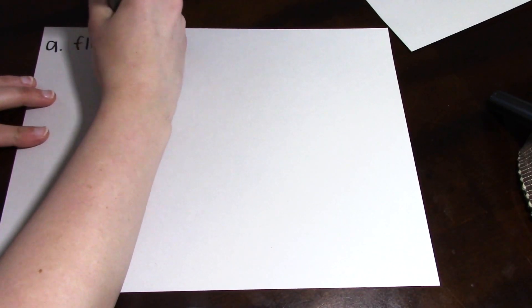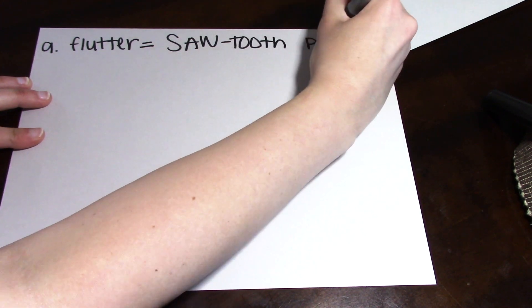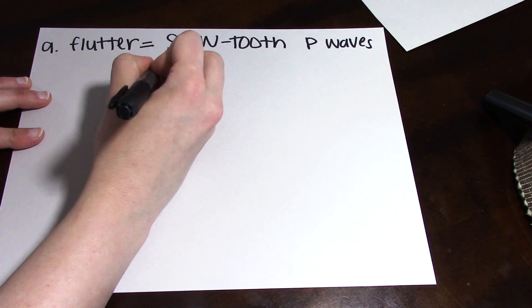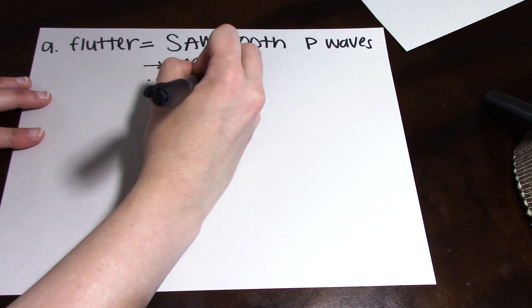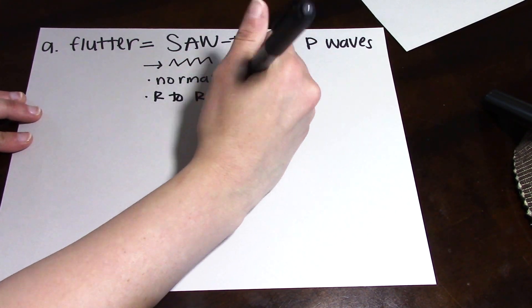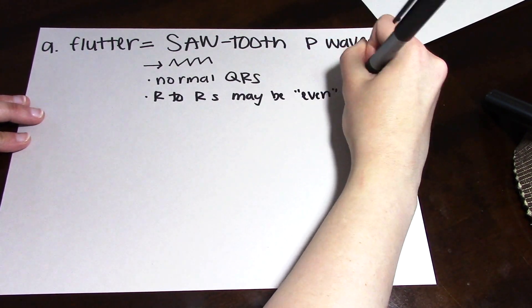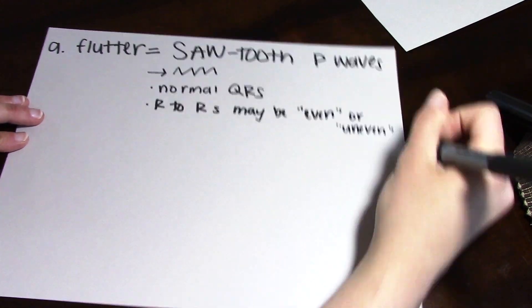So next is atrial flutter or aflutter. And in aflutter, your P waves are going to be sawtooth-like. You still are going to have normal QRS's, less than 0.10, and your R to R's may be uneven or they could be even, depending on how many P waves there are per QRS.